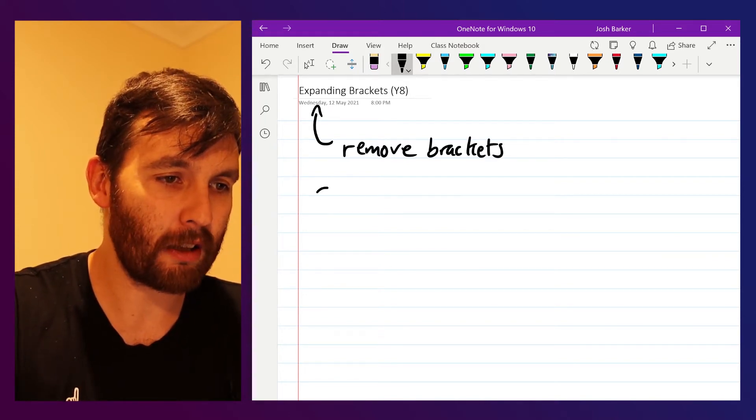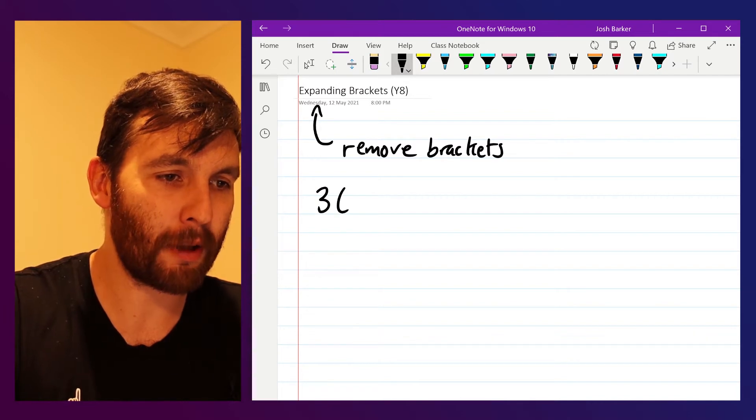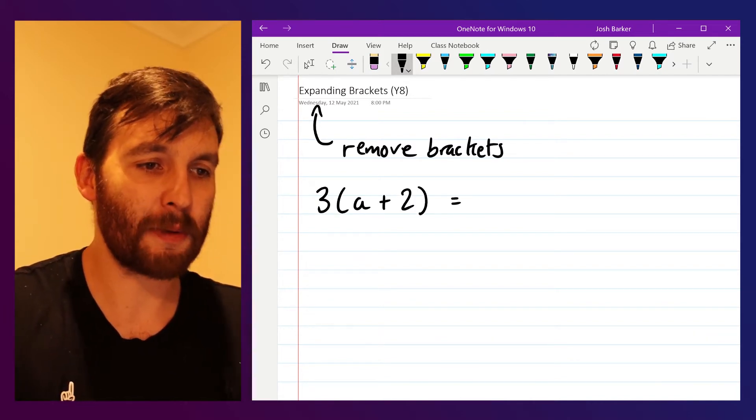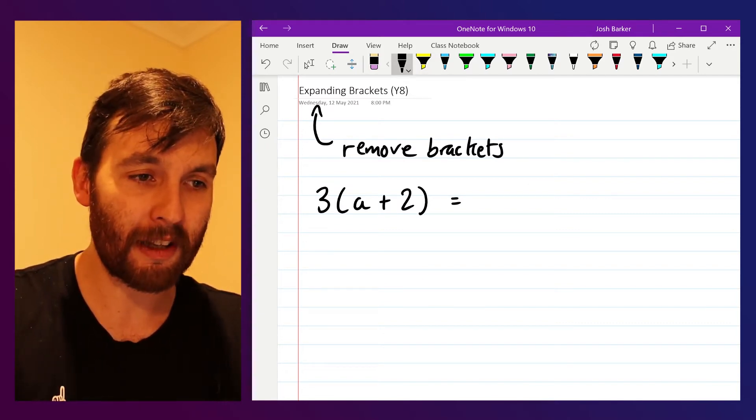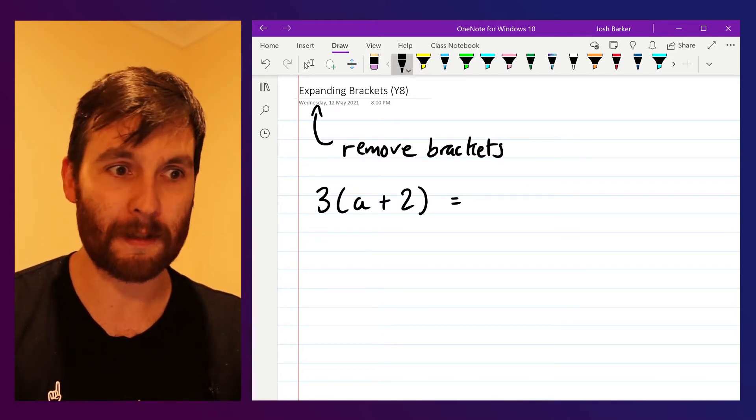So what this means is if we've got something like 3 multiplied by bracket a plus 2, what they're saying is we want to get rid of the brackets in that expression. So we want something that's equivalent to this but without the brackets being there.